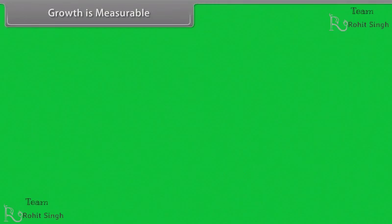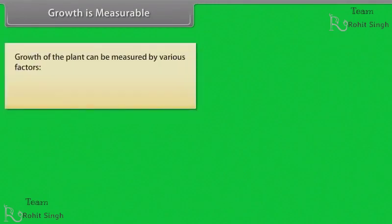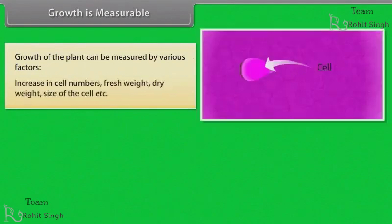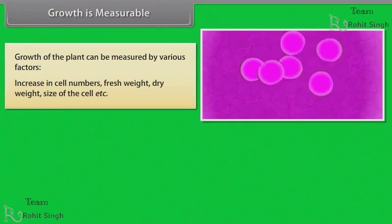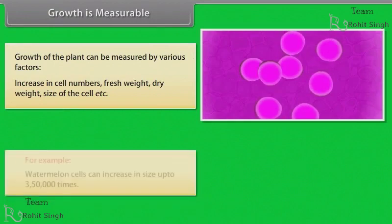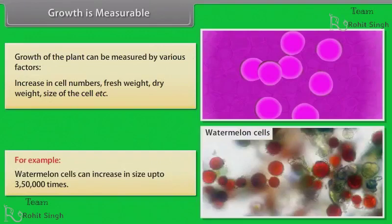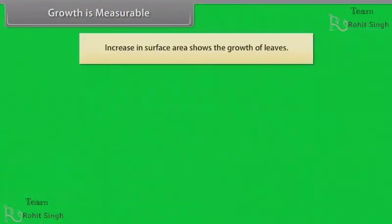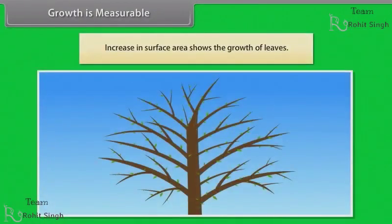Growth is measurable. Growth of the plants can be measured by various factors: increase in cell numbers, fresh weight, dry weight, size of the cell, etc. For example, watermelon cells can increase in size up to 3,50,000 times. Increase in surface area shows the growth of leaves.